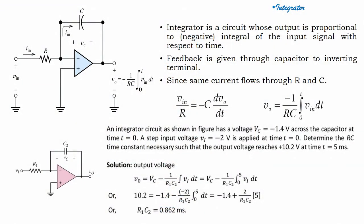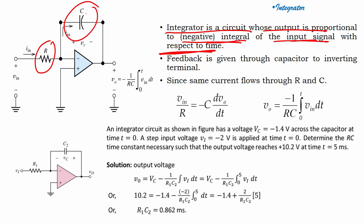If you come to the screen, what you see is: an integrator is a circuit whose output is proportional to the negative integral of the input signal with respect to time. Here, we have a resistor as the input, but in the feedback we have used a capacitor.